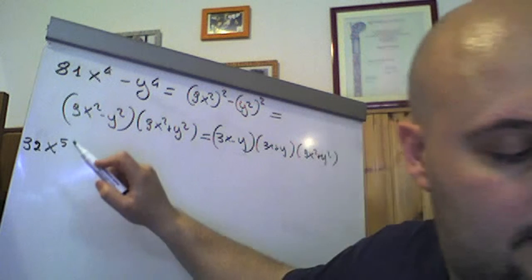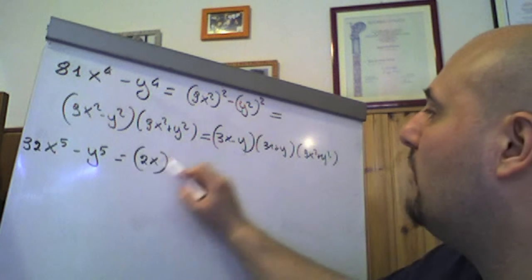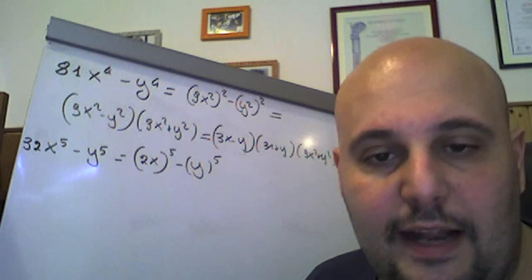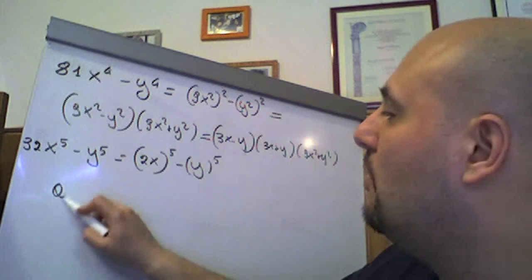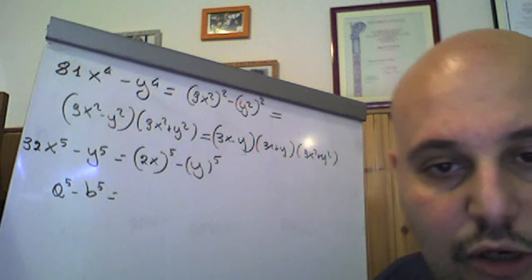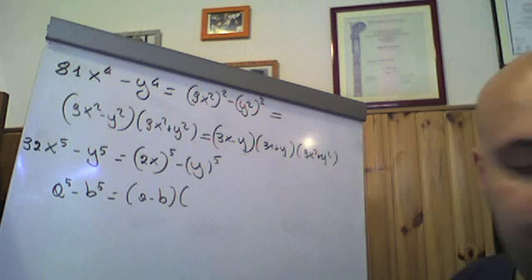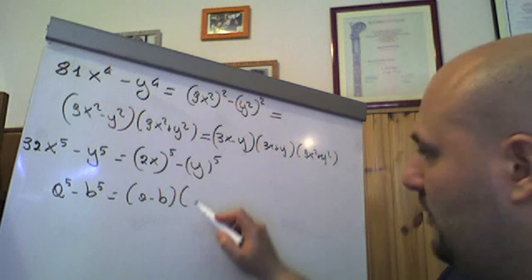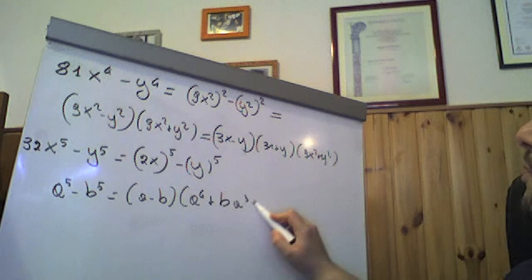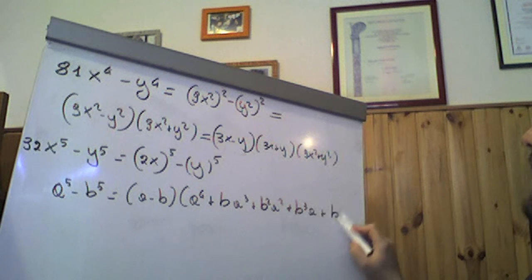32x⁵ meno y⁵. Bene, si può scrivere come 32 è un 2⁵, come (2x)⁵ meno y⁵, che è del tipo a⁵ meno b⁵. Differenza di potenze uguali dispari. Allora, a⁵ meno b⁵, ve lo ricordo, l'abbiamo dimostrato la scomposizione con la regola di Ruffini, che ci ha consentito, mediante una divisione, di sapere subito che qui c'è un (a meno b) e qui poi c'è un polinomio di questo tipo. Se lo ricordate, è (a⁴ + ba³ + b²a² + b³a + b⁴).